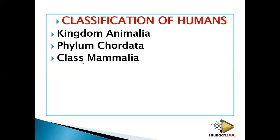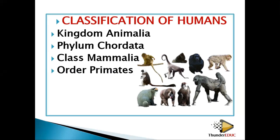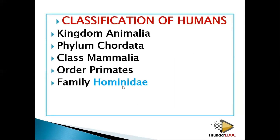Then we have Class: we are Mammalia — we are mammals. We have mammary glands, that's why it's called mammary. In science we don't use informal terms; we call them mammary glands. Then Order: Primates. All of us are under Primates, like chimpanzees and monkeys.